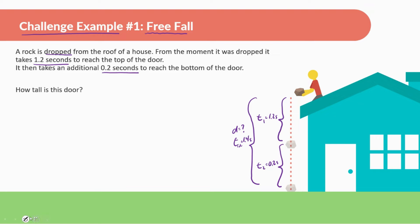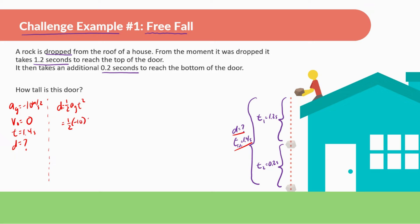Using these pieces of information, let's figure this out. Acceleration of gravity from when it was dropped is negative 10 meters per second squared. When it was dropped it had an initial velocity of zero, and it fell all the way to the bottom of the door in 1.4 seconds. So displacement equals one-half times acceleration of gravity times time squared — that's one-half times negative 10 times 1.4 squared. Putting this into the calculator, I get negative 9.8 meters. So the stone dropped 9.8 meters from the roof to the bottom of the door.